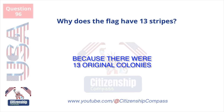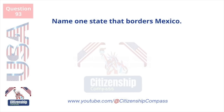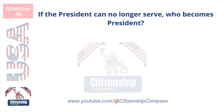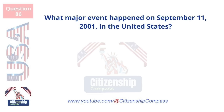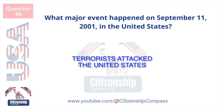Why does the flag have 13 stripes? Because there were 13 original colonies. Name one state that borders Mexico. Arizona. If the president can no longer serve, who becomes president? The vice president. What happened on September 11, 2001? Terrorists attacked the United States.